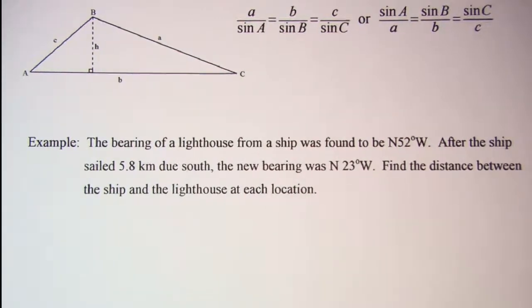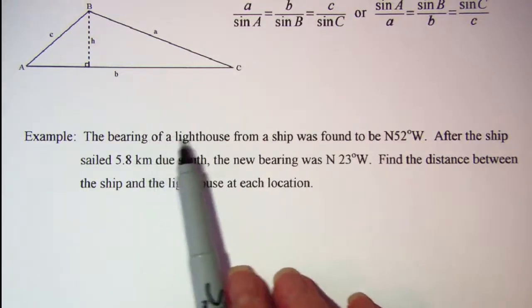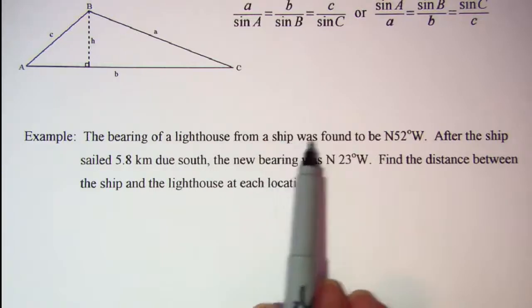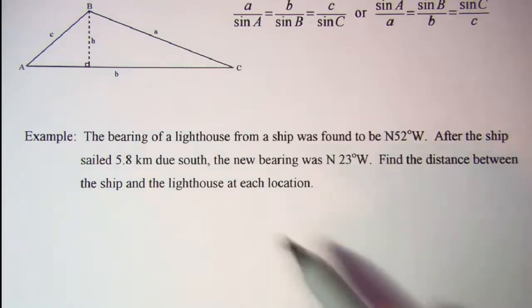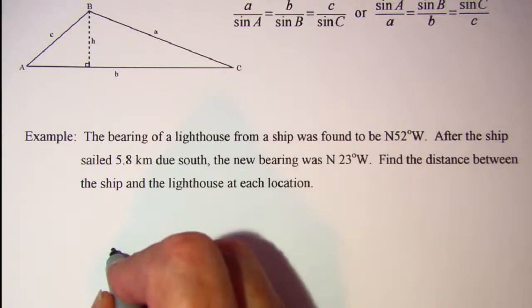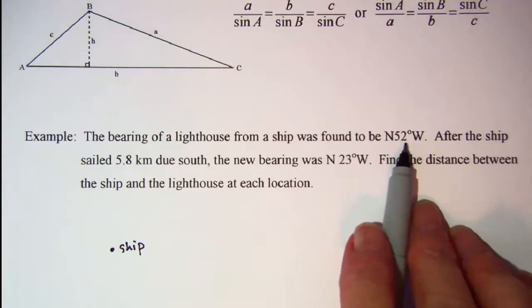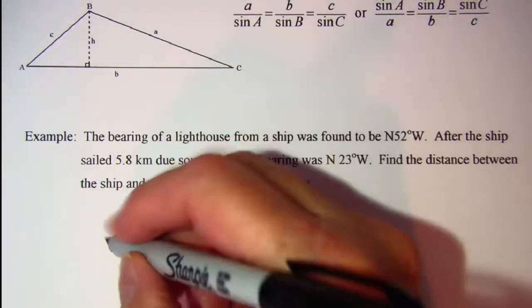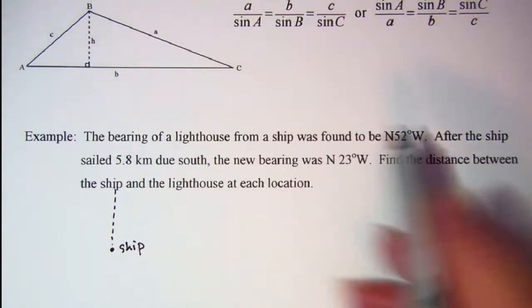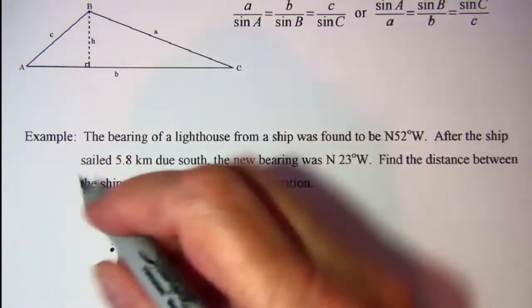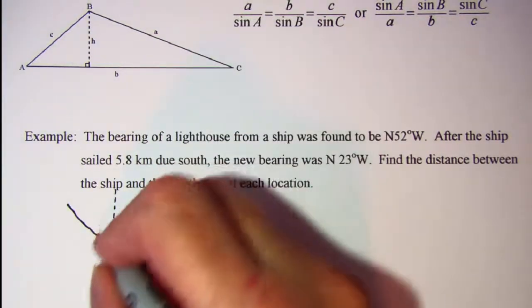So we need a diagram to give us an idea of the problem. We're talking about the bearing of a lighthouse from a ship, and then north 52 degrees west. So here's our ship. And we want north 52 degrees west. So that means from due north, we need 52 degrees west, which means this direction, maybe about like this, so this is 52 degrees right here.